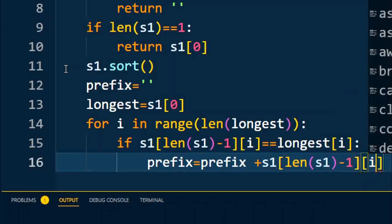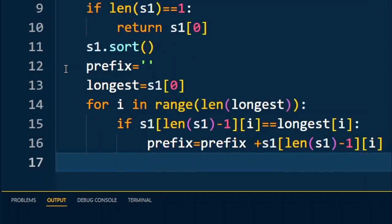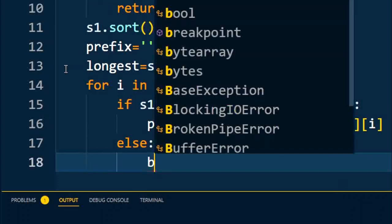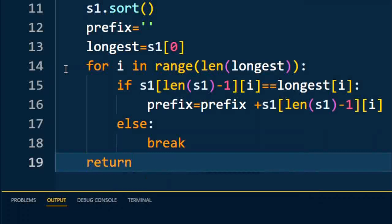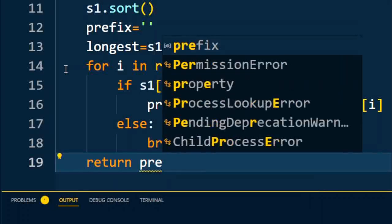But if that same character does not get matched, then we are going to break the loop. After completion of the loop, we are going to return the value which is inside the prefix.